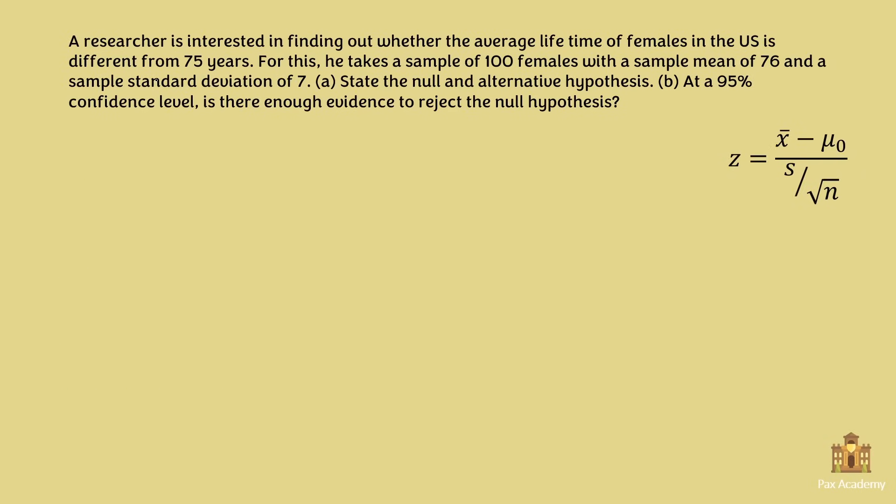Now let's look at this exercise. A researcher is interested in finding out whether the average lifetime of females in the US is different from 75 years. For this, he takes a sample of 100 females with a sample mean of 76 and a sample standard deviation of 7. State the null and alternative hypotheses, and at a 95% confidence level, is there enough evidence to reject the null hypotheses?